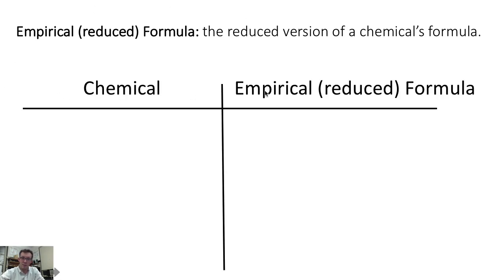So some examples of empirical formulas. If we had the chemical glucose, which is sugar, which has a chemical formula of C6H12O6, its empirical formula - we'd notice that we can divide each of these subscripts by 6. And so the empirical formula would be 1 carbon to 2 hydrogens to 1 oxygen.